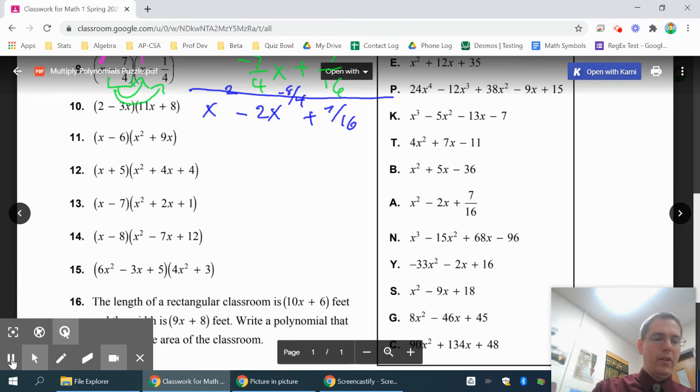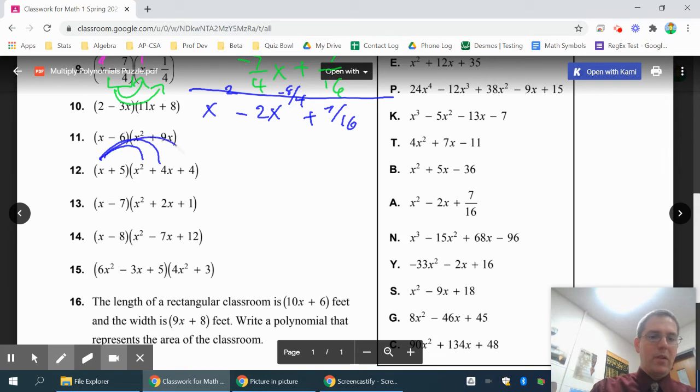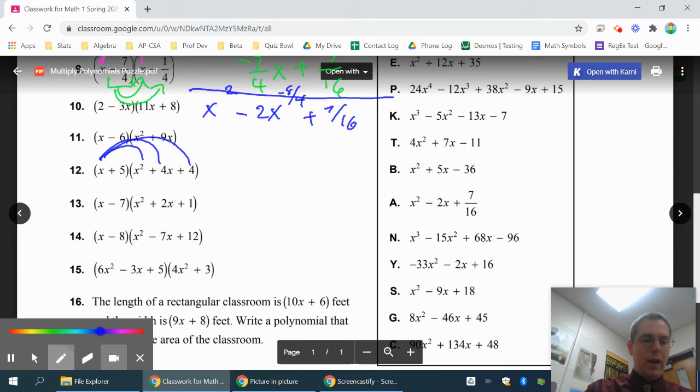Okay, number 12 might look a little bit scary, but if you're doing the distributed method, you would just multiply the x times everything, and then you would multiply the 5, in this case positive 5, times everything.